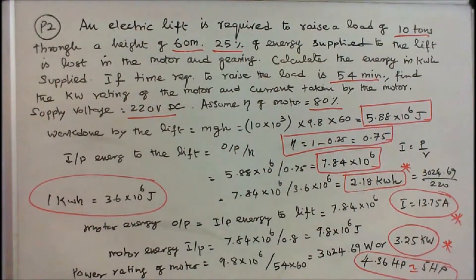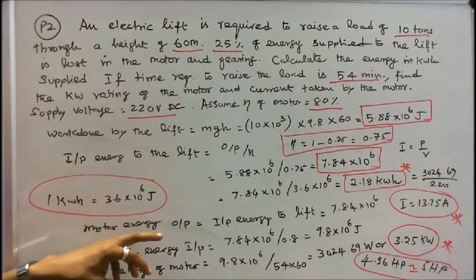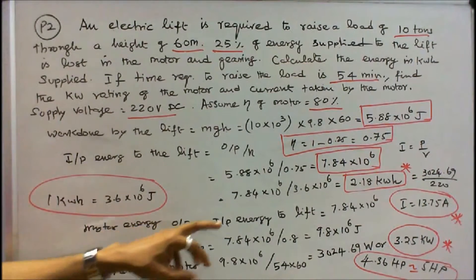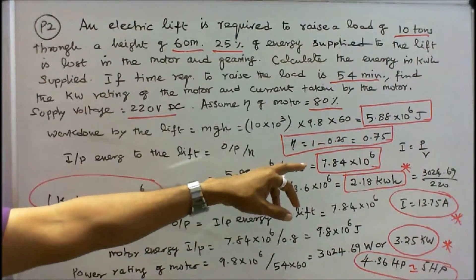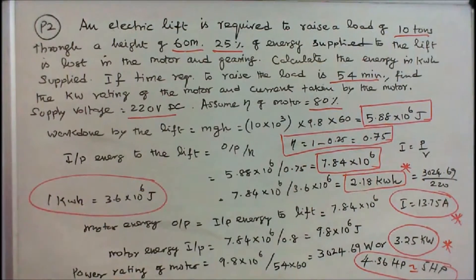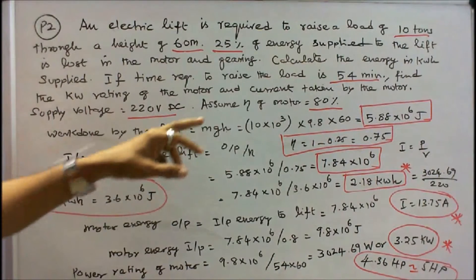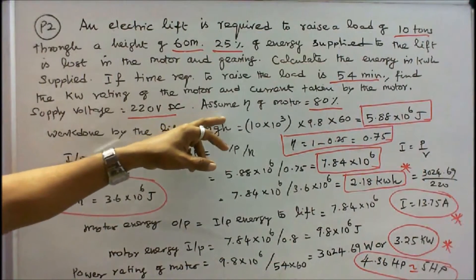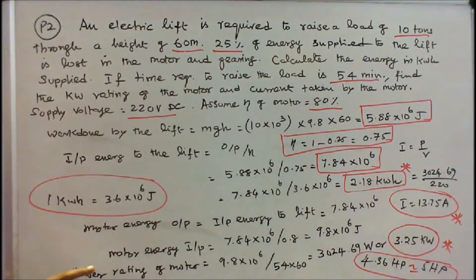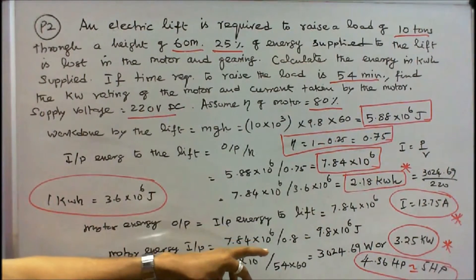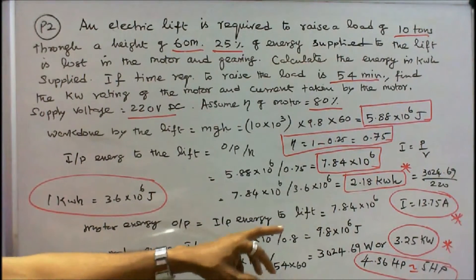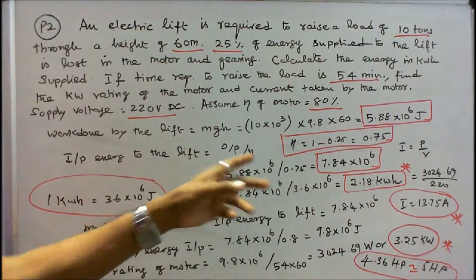Motor energy output is equal to input energy to the lift, that is 7.84 into 10 power 6. We know the efficiency of the motor is 0.8. Motor energy input is equal to 7.84 into 10 power 6 divided by 0.8, that is equal to 9.8 into 10 power 6 joules.